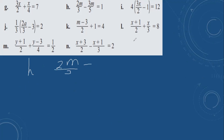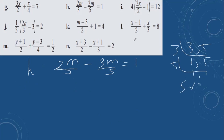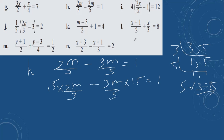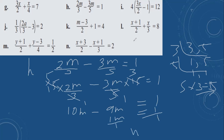Then h: 2m divided by 3 minus 3m divided by 5 equals 1. Find the LCM of 3 and 5. Both are prime numbers, so 5 times 3 is 15. LCM is 15. Multiply both sides by 15. 3 cancels giving 5 times 2 is 10m; 5 cancels giving 3 times 3 is 9m. 10m minus 9m equals 15 times 1, so 1m equals 15, but then m equals 1.